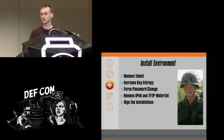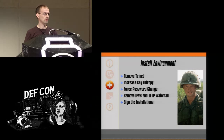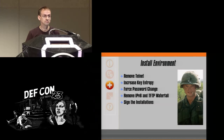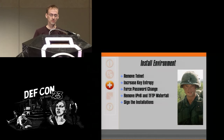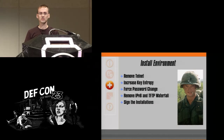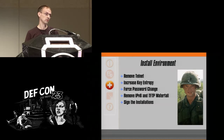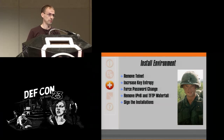Install environment: remove Telnet — it's insecure. Use SSH. With SSH, increase key entropy, enforce a password change, for God's sake. We've all done factory resets — we forget these things. Remove IPv6 and TFTP fallback. There's nothing wrong with having DHCP provide an installation URL — we can protect the DHCP server, make sure it's the only one running. And of course, a good option would be signed installation — the best option. There are always problems with keys and signing, but ultimately that would be the best solution.